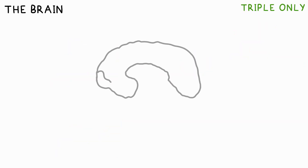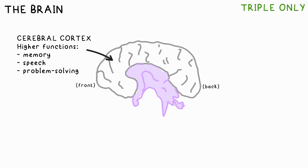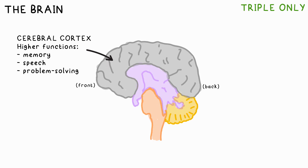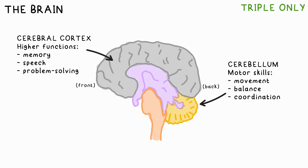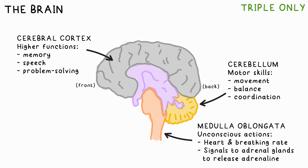These are the parts of the brain you need to know. The cerebral cortex is responsible for higher level functions like memory, speech and problem solving. The cerebellum is responsible for your motor skills, movement, balance and coordination. The medulla oblongata controls unconscious actions your body takes — you don't think about them — like your heart beating or breathing.